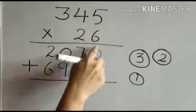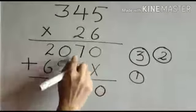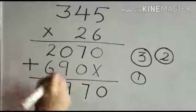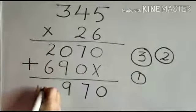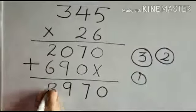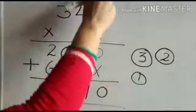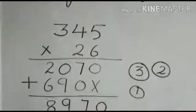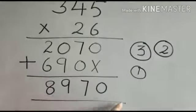So 0, 7, 0 plus 9 equals 9, and 2 plus 6 equals 8. So the product of 345 by 26 is 8,970.